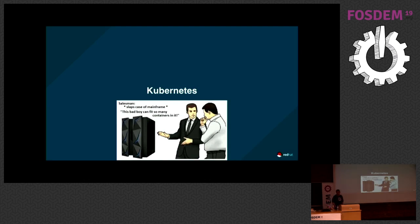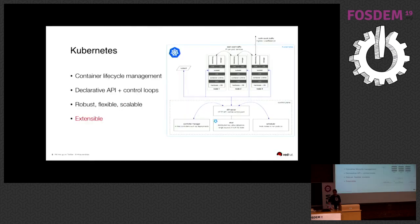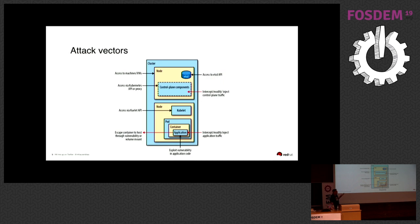Let's have a look at Kubernetes. It's an example of a portable container management lifecycle system that has a bunch of declarative APIs and control loops essentially trying to reconcile the observed state with the desired state. It's very robust, flexible, and extensible. You can see there are many, many moving parts that you potentially have to worry about — a lot of attack vectors both in the control plane and in the data plane, where the entire state is stored in etcd.